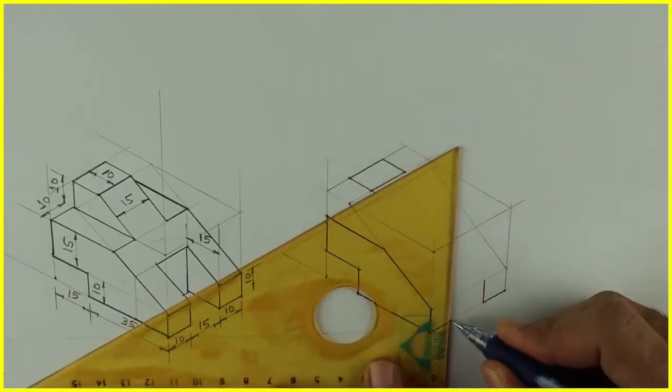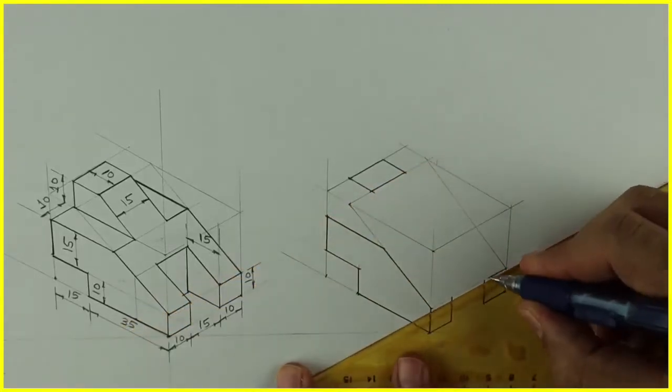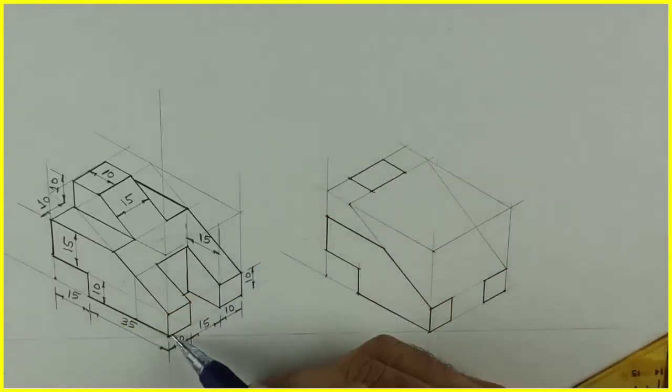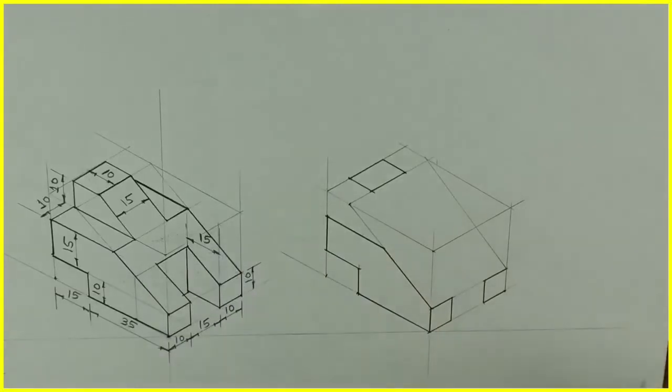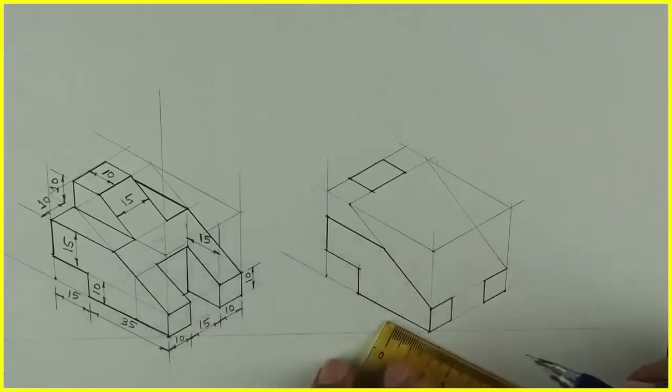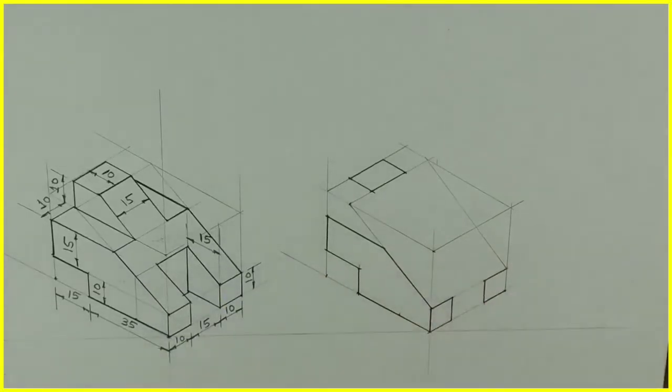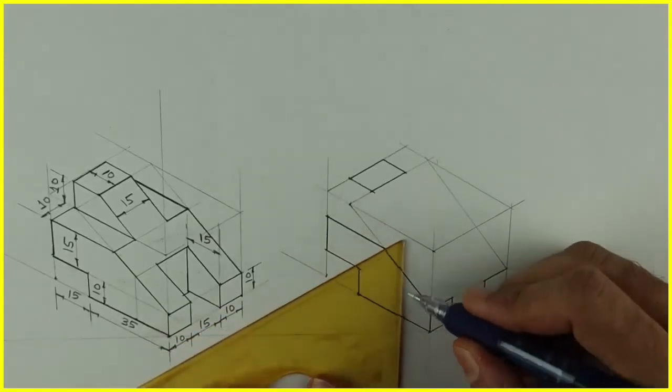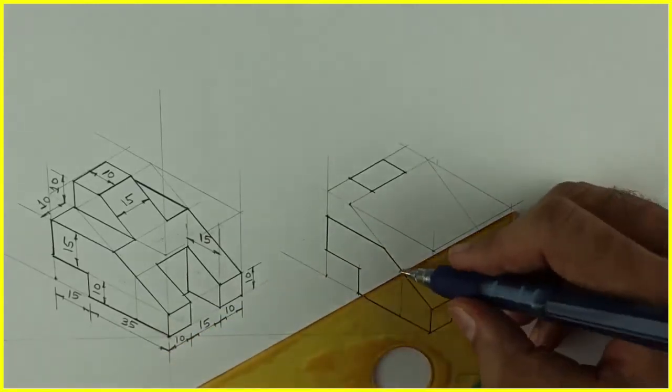Go up by 10. Now we need to draw that slope, right. So you take from this side 15. So take it on this - always take on the box, you should not take it on the inclined surface.